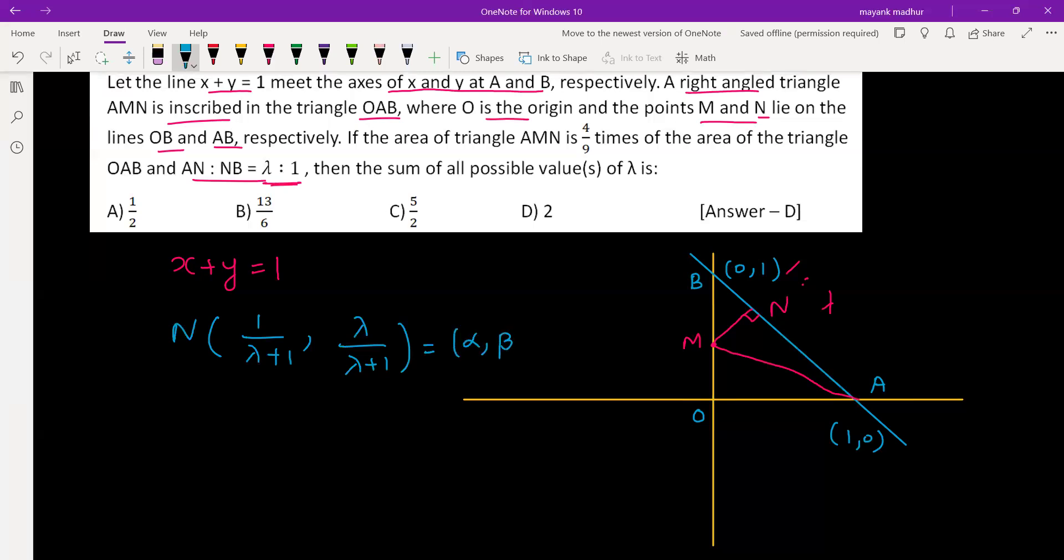This coordinate is alpha beta. Now we have another information: area of triangle AMN is 4 by 9 times area of triangle OAB. Triangle OAB is a right angle triangle with area one half. Four by nine times gives you 2 by 9.